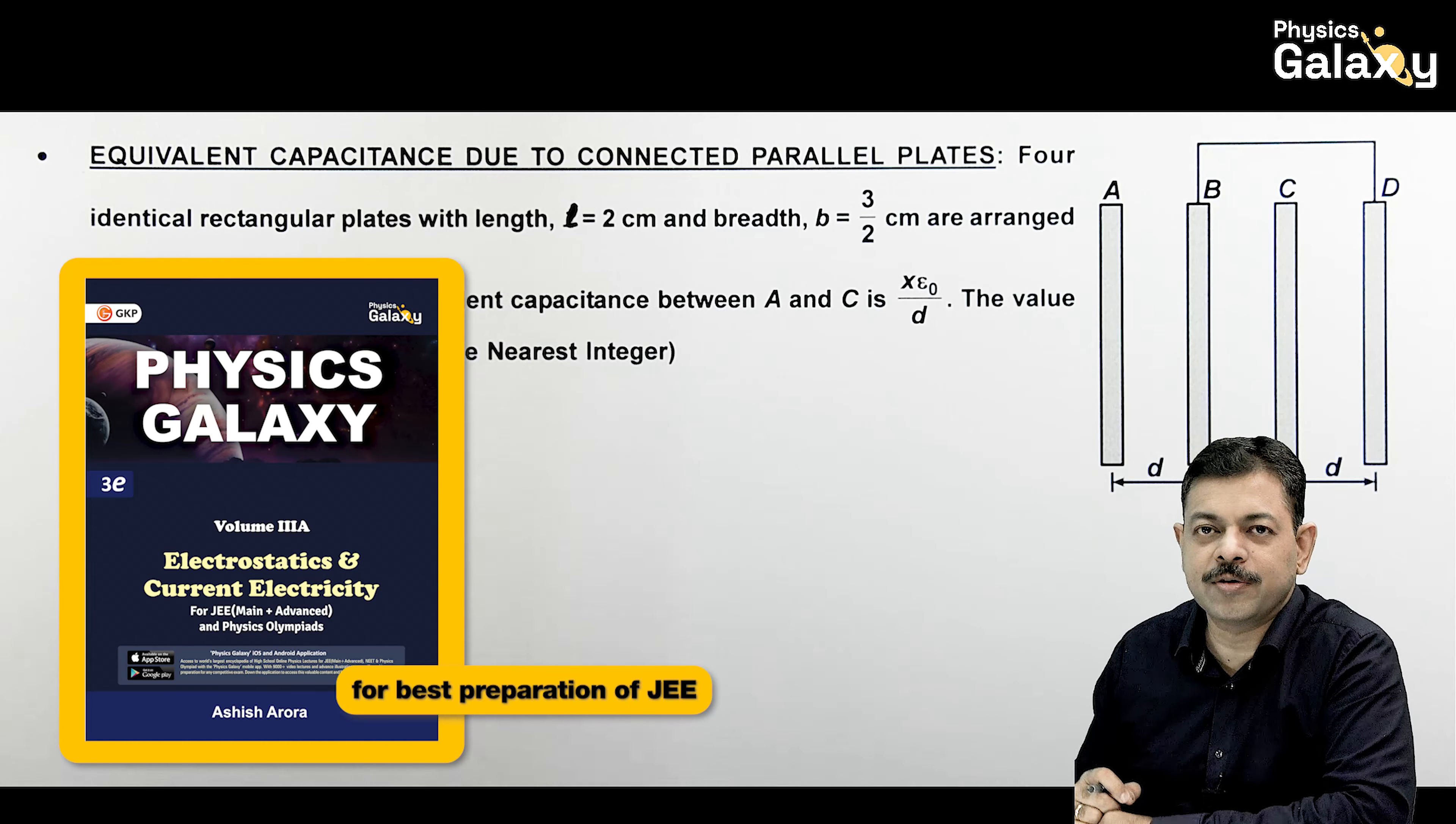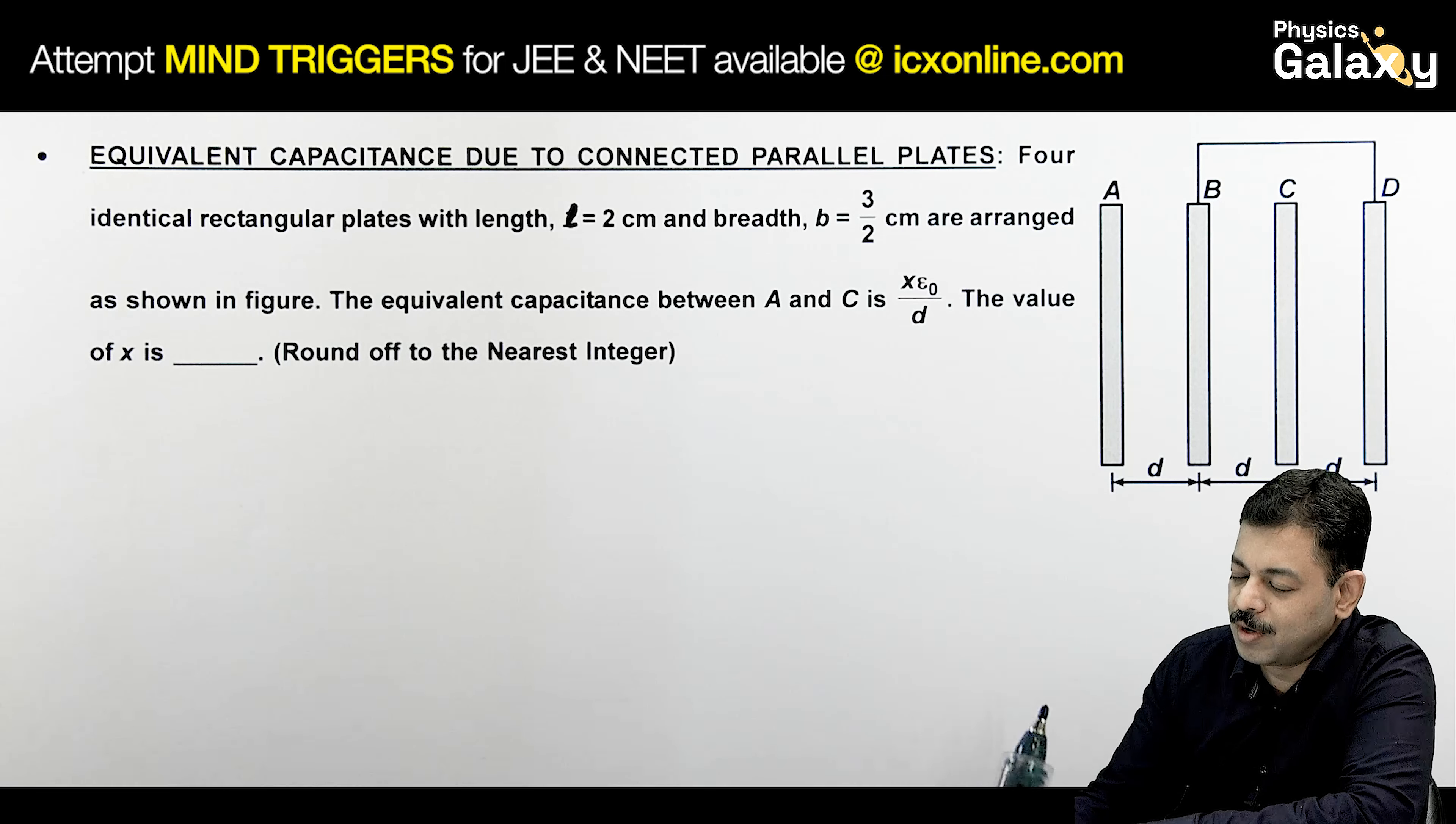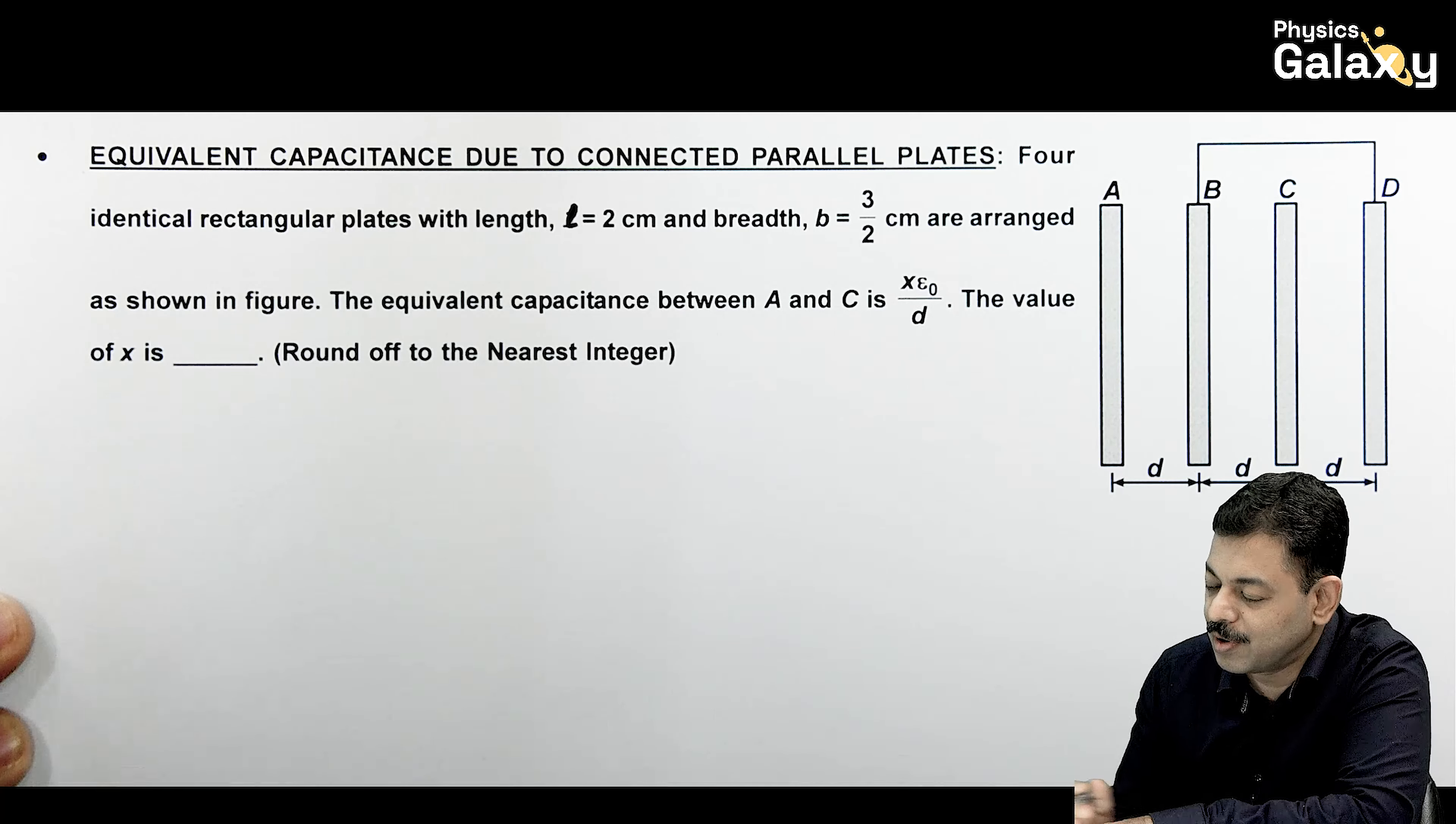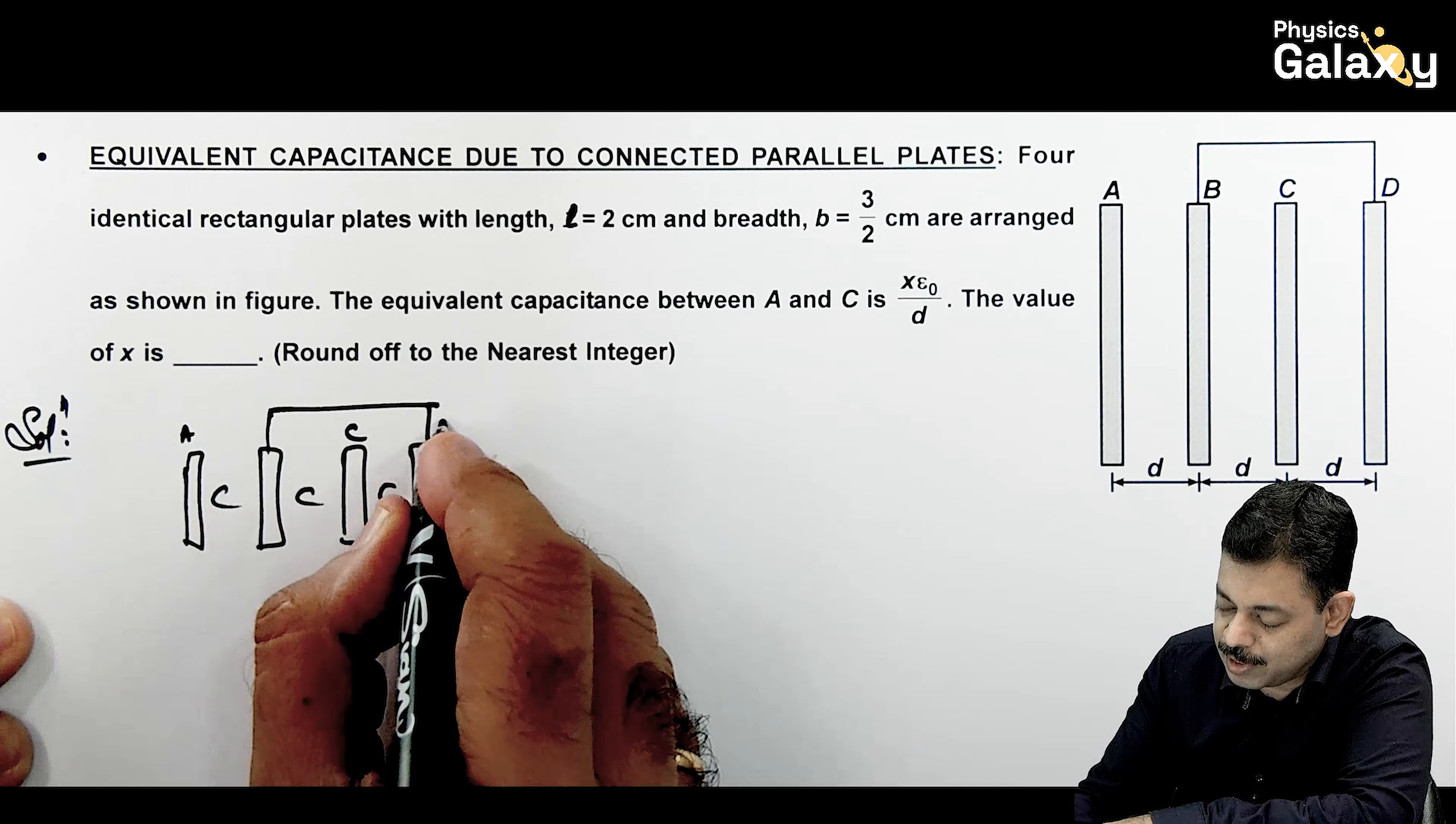Thank you. Thank you Pooji. Absolute not by D. To value of X hum ko nikal na hai. So for any 3 plates, any 4 plates, here you can see. Jab hum capacitance ki baat karenge, 4 capacitor hain. To they are forming 3 capacitors C, C, C. Or plate A or C ko open chhoda hoa hai. B ko D se connect kiya gaya, like this.